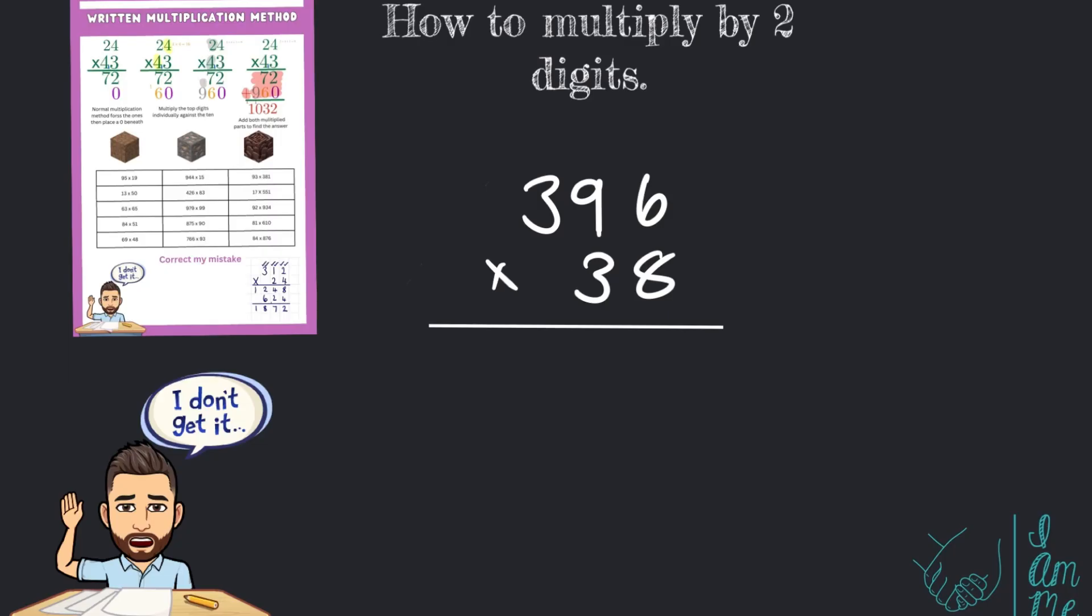Let's take a look at one more together. Here we have 396 multiplied by 38. The first thing I need to do is multiply the 6 by 8. 6 times 8 is 48. Put the 8 down. Carry the 4 across. Then I tick the 6 just to remember I've done it.